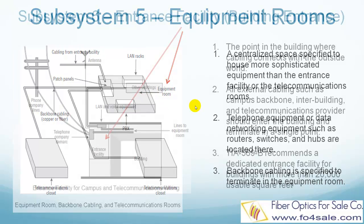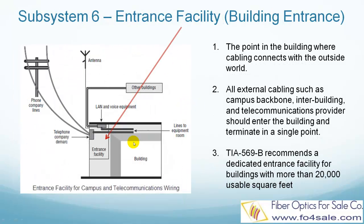The entrance facility specifies the point in the building where cabling connects with the outside world. All external cabling such as campus backbone, inter-building, and telecommunications provider connections should enter the building and terminate in a single point. TIA 569B recommends a dedicated entrance facility for buildings with more than 20,000 usable square feet.